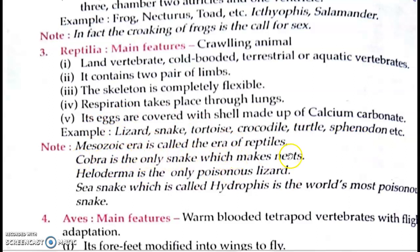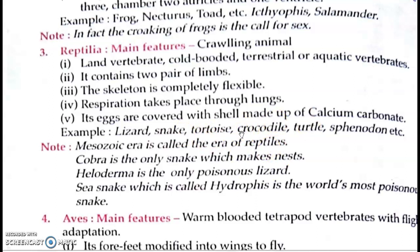Mesozoic era is called the era of reptiles. Cobra is the only snake which makes a nest — baaki koi snake nest nahin banata. Heloderma is the only poisonous lizard. Sea snake called hydrophis is the world's most poisonous snake. Mesozoic era — middle life period — mein bahut zyada giant reptiles hamaari earth par the, jaise dinosaurs and monstrous beasts roamed the earth. Isliye ise kaha gaya Mesozoic era is the era of reptiles — kyunki dinosaur bhi reptile hain.